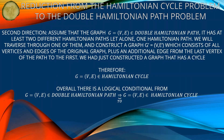Second direction: assume that graph G = (V, E) is in double Hamiltonian path. It has two different Hamiltonian paths — in particular, at least one Hamiltonian path. We traverse through one of them and construct graph G' = (V', E'), which consists of all vertices and edges of the original graph plus an additional edge from the last vertex of the path to the first vertex.